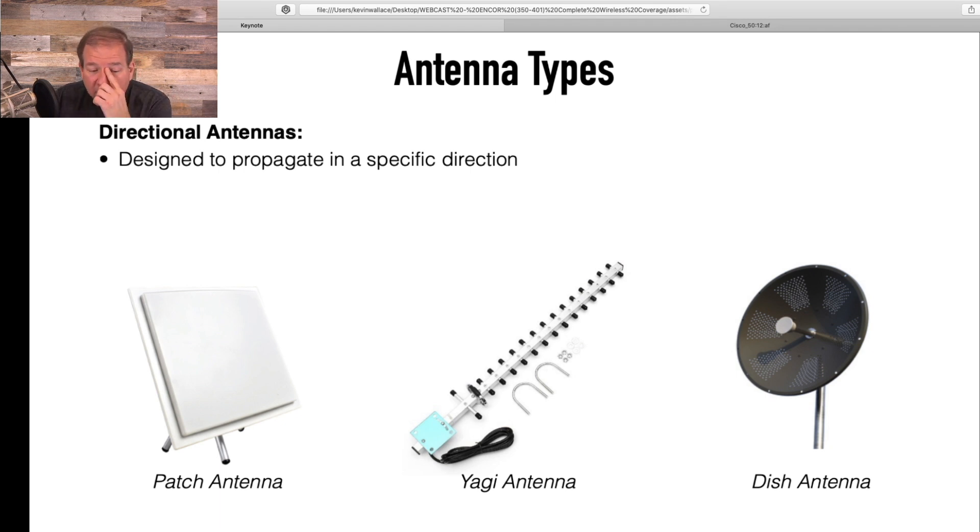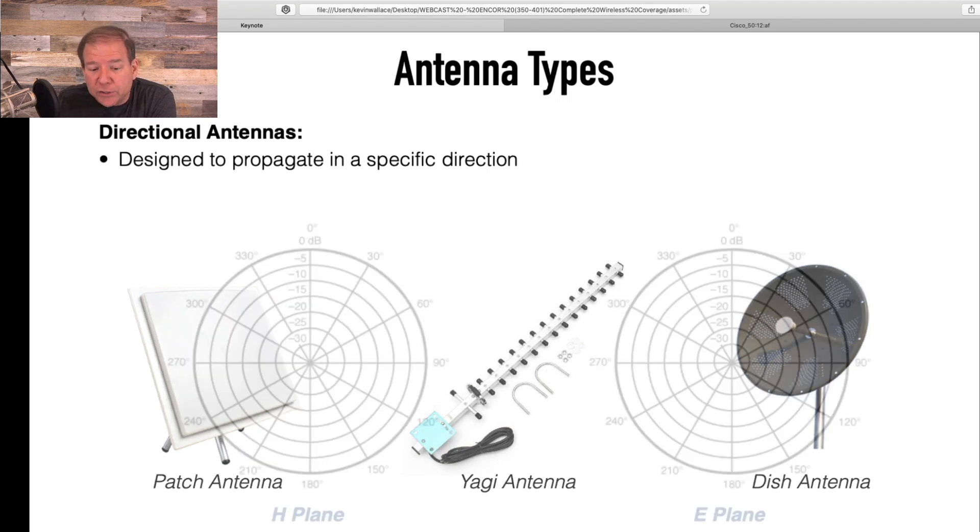I've already showed you an example of a patch antenna. This is what I have out of my pool area right now. It mounts outdoors and it covers this one area of the pool. And you could have a Yagi antenna, one that's pictured here. That's going to give you sort of moderate range. If you want longer range, you can use a dish antenna or a parabolic antenna. But those are some examples of directional antennas.